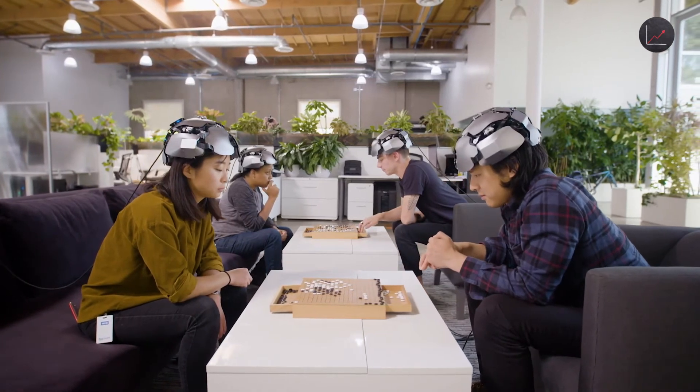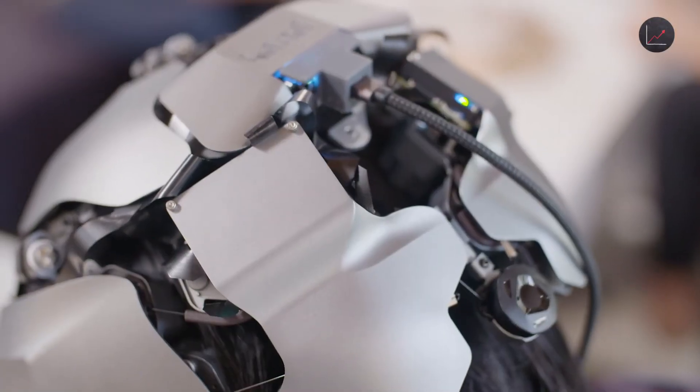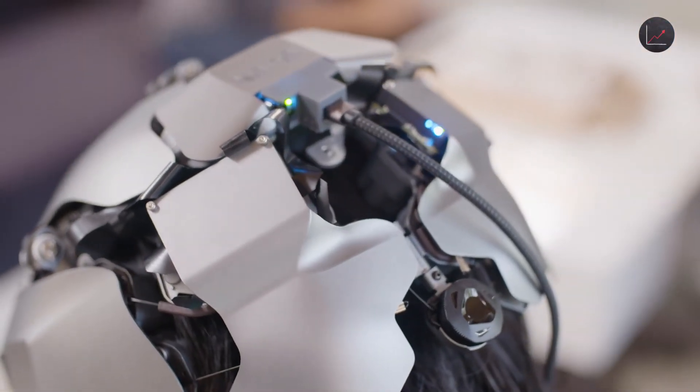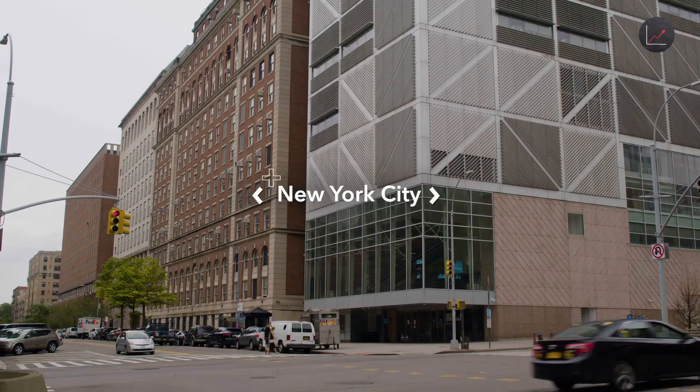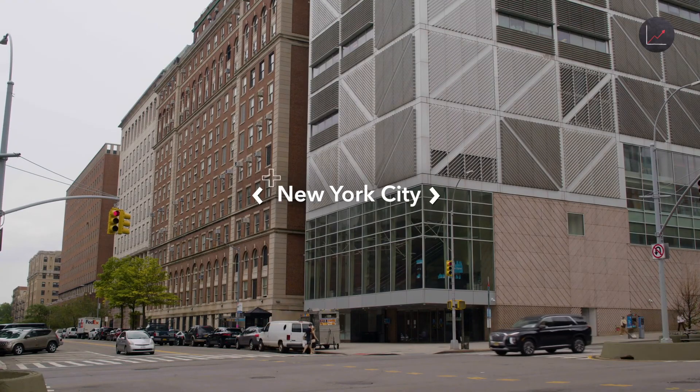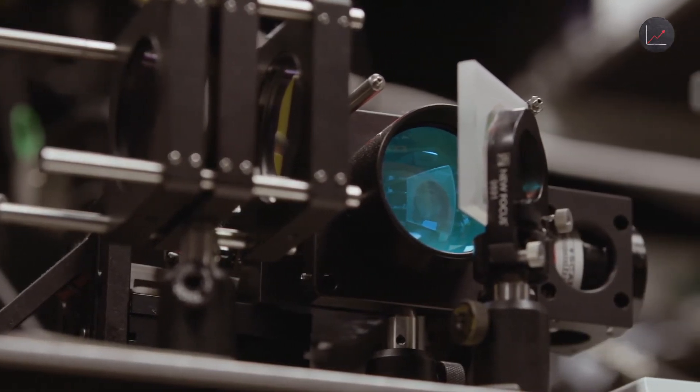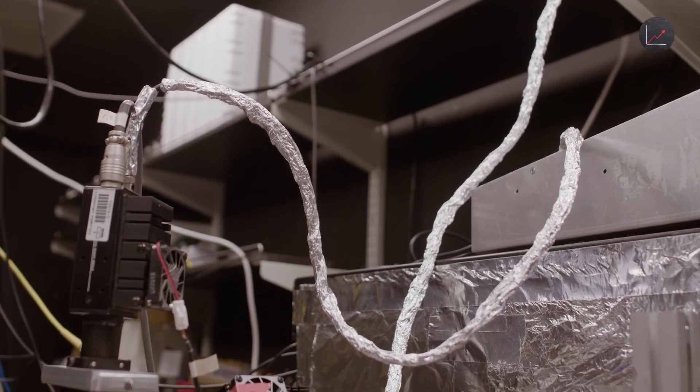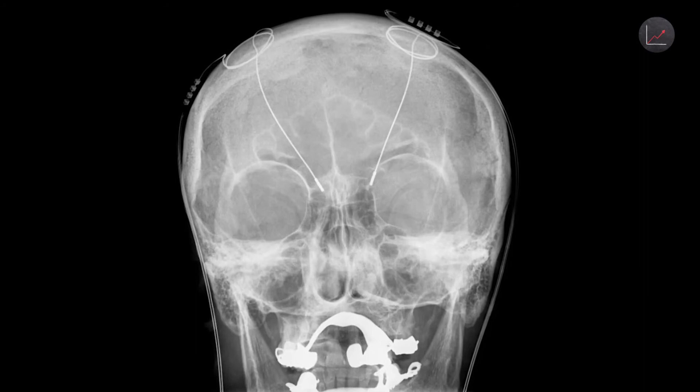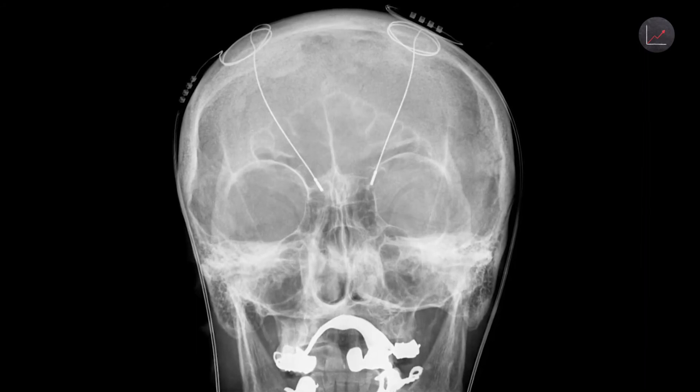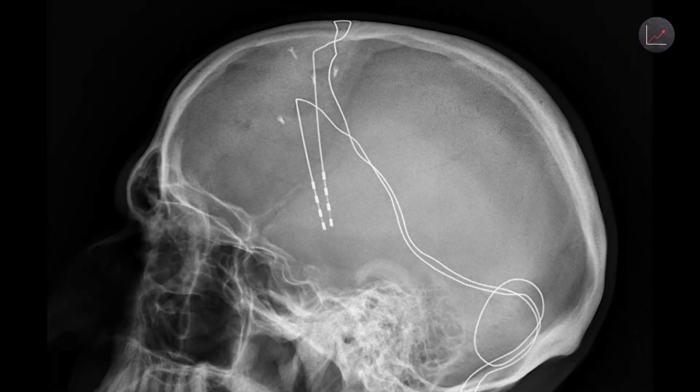As varied as the current crop of BCIs is, most focus on the same thing. Reading the activity of the brain and translating that into useful information. But there's another frontier in our attempts to access the brain that comes with more troubling implications. Not just reading from the brain, but actually writing to or directly influencing it. In a sense, this is already being done, with devices like deep brain stimulators, which send electrical impulses into the brain to treat movement disorders like Parkinson's.